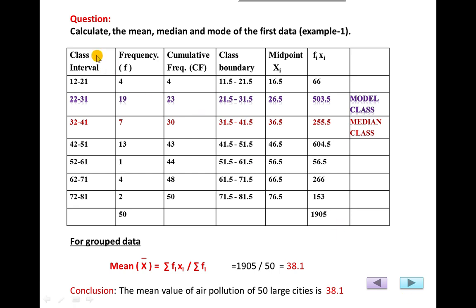Now we will apply the grouped data formulas for mean, median, and mode using Example 1. This is the table you have already calculated — with class intervals, frequency, cumulative frequency, class boundaries, and midpoints. We now add an extra column: the product of frequency and midpoint, which is the requirement for calculating the mean.